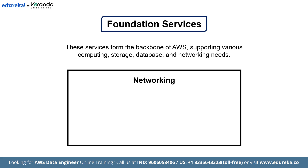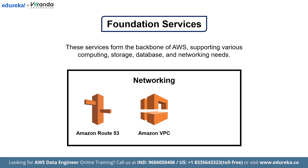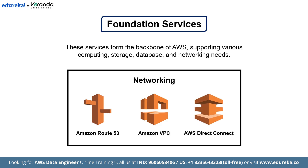Finally, networking services connect all the components ensuring seamless communication and data transfer across the AWS ecosystem. First we have Amazon Route 53, a scalable and highly available domain name system web service. Next, Amazon VPC, which stands for Virtual Private Cloud. Amazon VPC lets you provision a logically isolated section of the AWS cloud where you can launch AWS resources in a virtual network. Next, AWS Direct Connect allows you to establish a dedicated network connection from your premises to AWS.